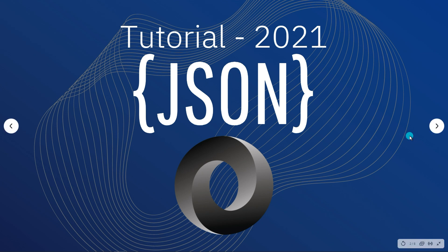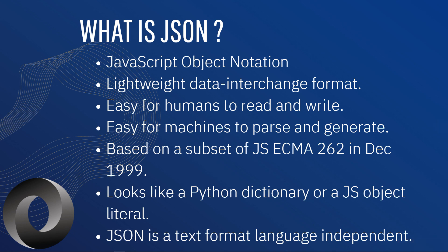So what is JSON? JSON stands for JavaScript Object Notation. It's a lightweight data interchange format. It's very easy for humans to read and write, and easy for machines to parse and generate. It's also based on a subset of the ECMAScript 262 in 1999. It looks like a Python dictionary or JavaScript object literal, and JSON is a text format that is language independent, so it can work with different languages — C#, C++, Python, Java, and all the languages you can think of.